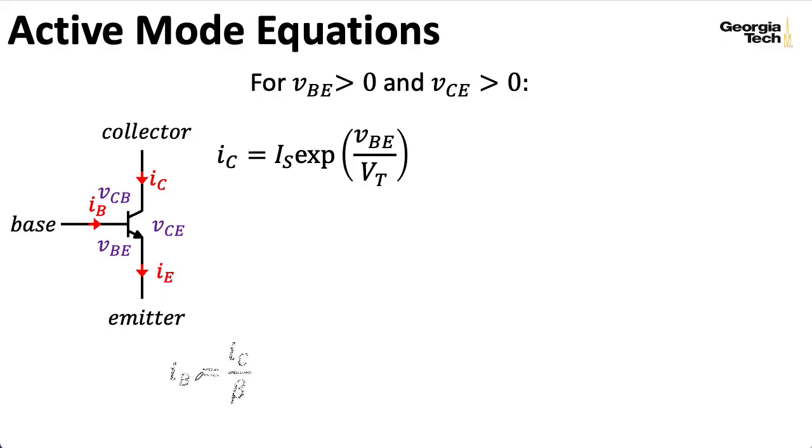Now, we'll say that the base current is equal to the collector current divided by a parameter beta. And we'll usually write this as IC equals beta times IB. And the emitter current is the sum of the collector current and the base current.